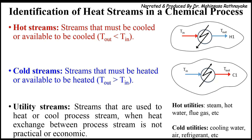There can be three types of heat streams available in a chemical process: hot streams, cold streams, and utility streams. Hot streams are the streams that must be cooled, where the inlet temperature is larger than the outlet temperature. Cold streams must be heated so that the inlet temperature is lower than the outlet temperature. Utility streams are used to heat or cool a process stream when heat exchange between process streams is not practical or economic. Examples of hot utilities are steam, hot water, and flue gas. Examples of cold utilities are cooling water, air, and refrigerant.